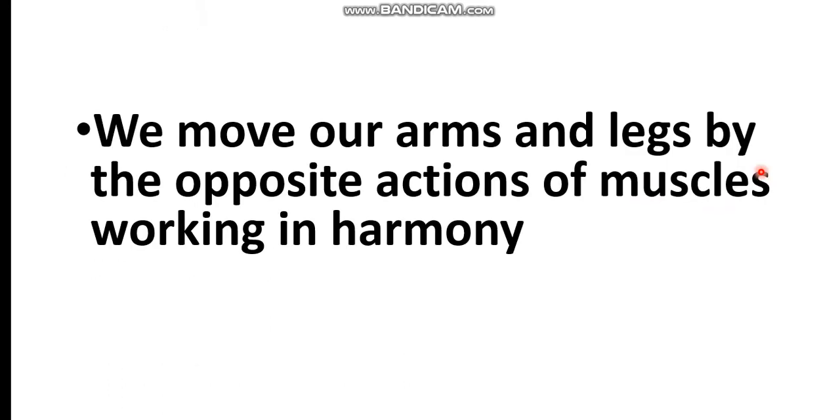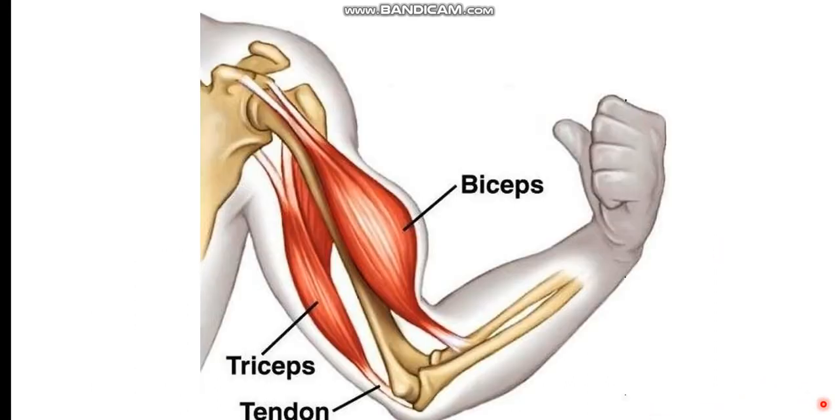We move our arms and legs by the opposite actions of muscles working in harmony. These are the muscles of the forearm, biceps and triceps.